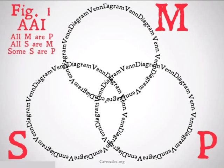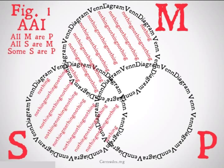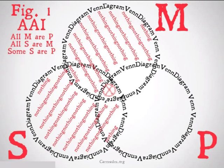Figure 1, A-A-I: All M are P, all S are M, therefore some S are P. Clearly, it's not going to be valid for Boole, because there is no X, and we need an X for the I statement to be true. However, it could be valid for Aristotle, because it has that particular conclusion. We're going to put an X with a circle around it in the only spot that's available for that S circle.